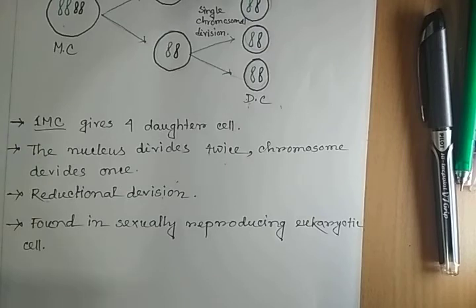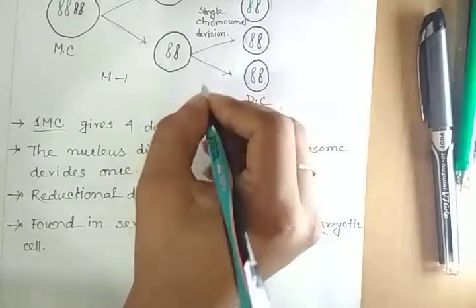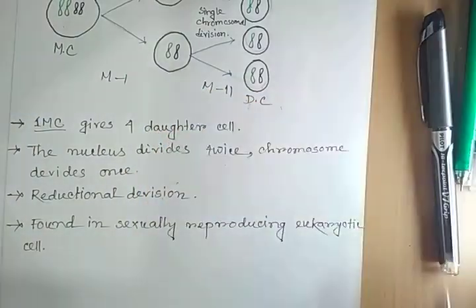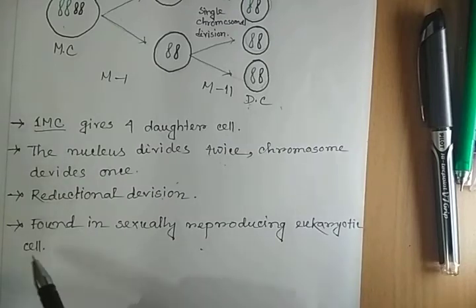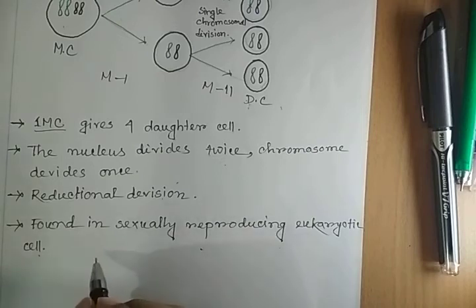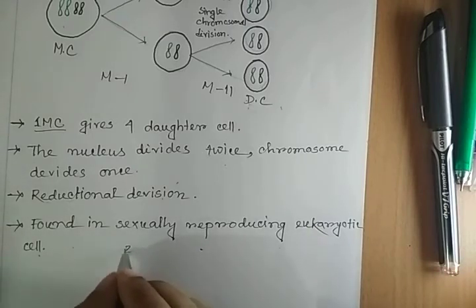Meiosis is divided into two parts: meiosis I and meiosis II. This type of cell division is found in sexually reproducing eukaryotic cells, that means higher organisms. Meiosis takes place before gamete formation, but in lower organisms, meiosis takes place in the gamete itself.